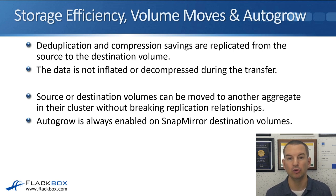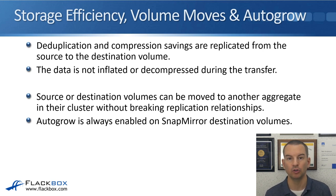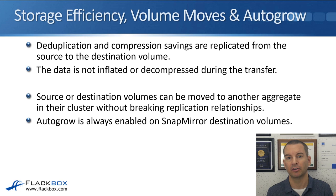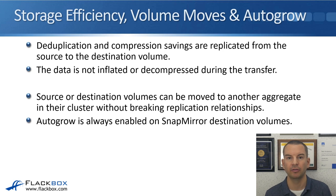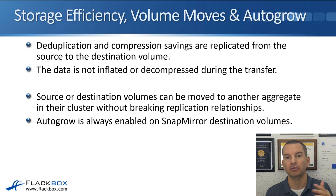Source or destination volumes can be moved to another aggregate in their cluster without breaking replication relationships. So if you've already set up SnapMirror and then you move a source or a destination volume, SnapMirror is going to keep working the same as before. AutoGrow is always enabled on SnapMirror destination volumes because the destination volume needs to have enough room for all of the data in the source volume. If you change the size of the source volume and make it bigger, that will also be carried over to the destination side. If the destination side is running out of room, AutoGrow will automatically make the volume bigger as long as there's room in its aggregate.